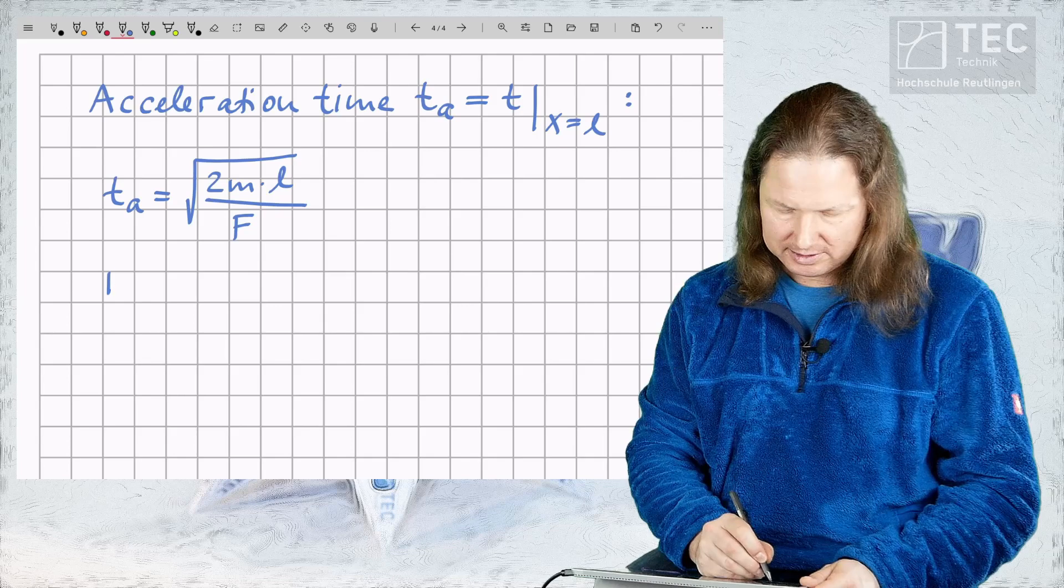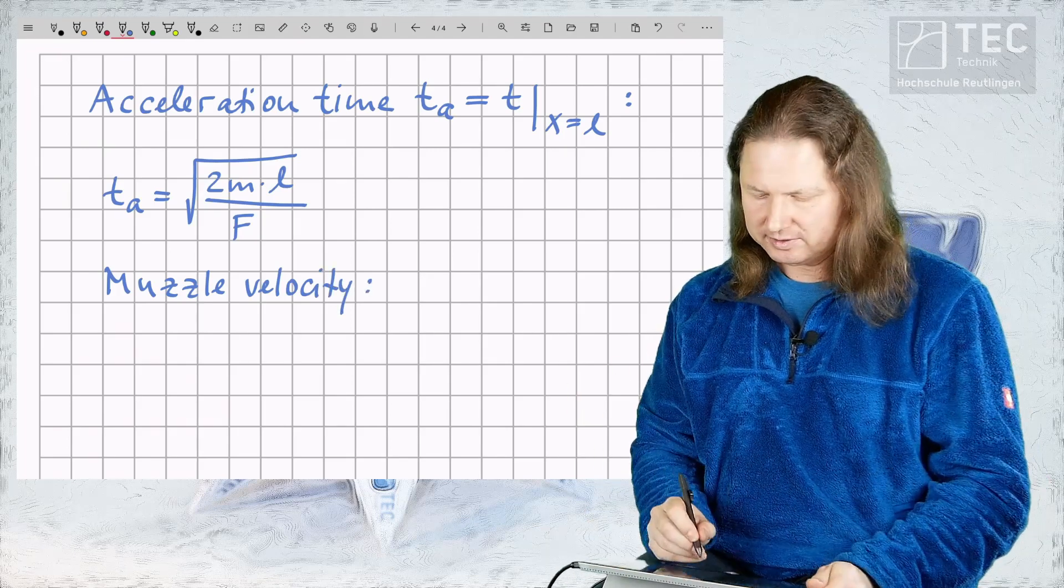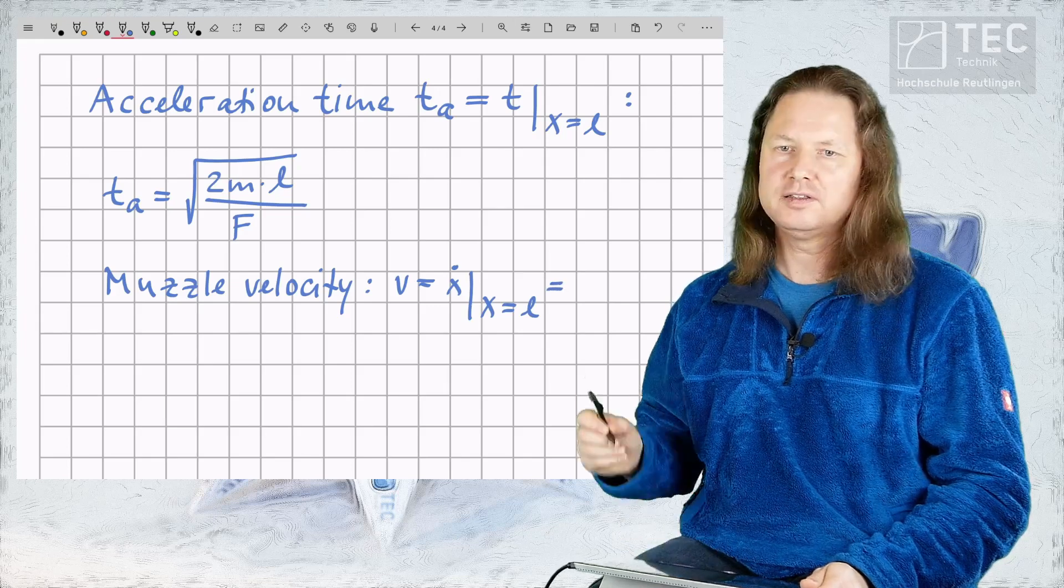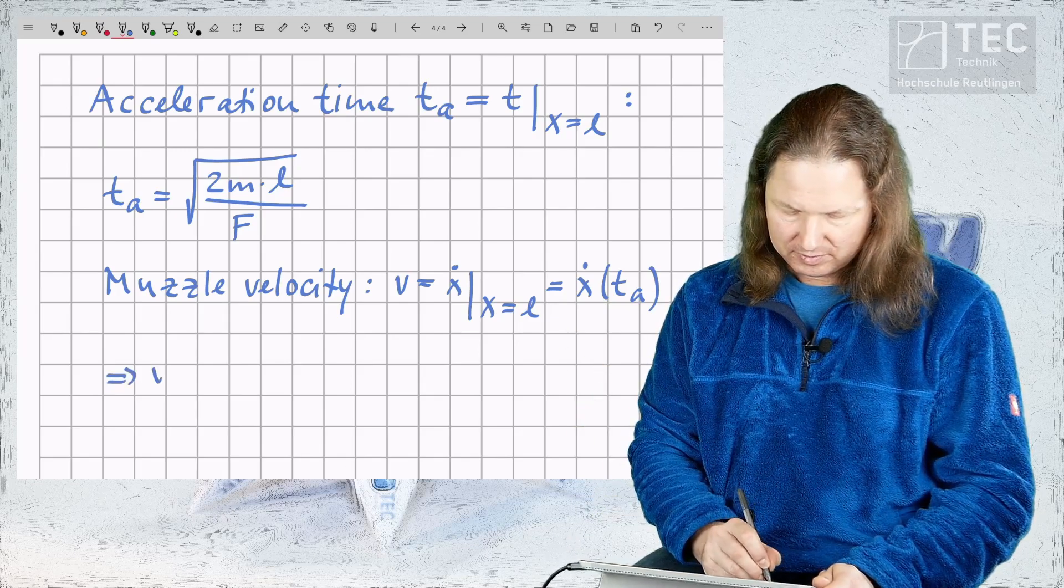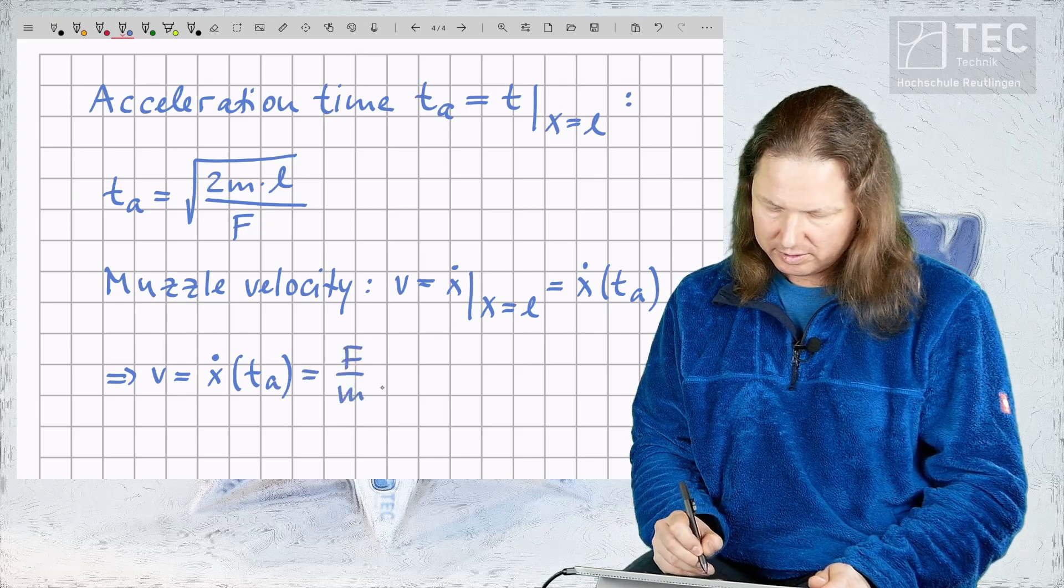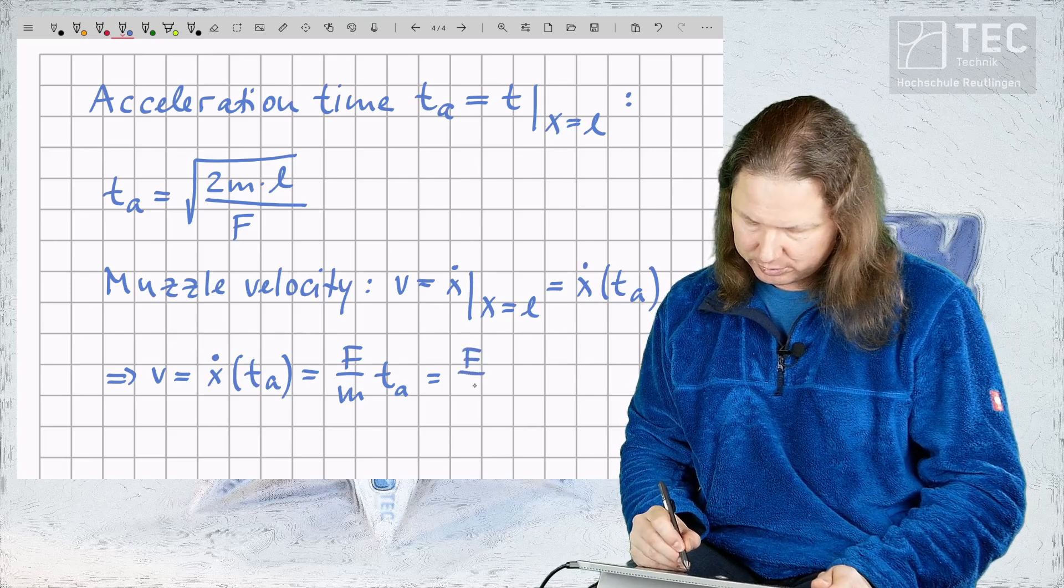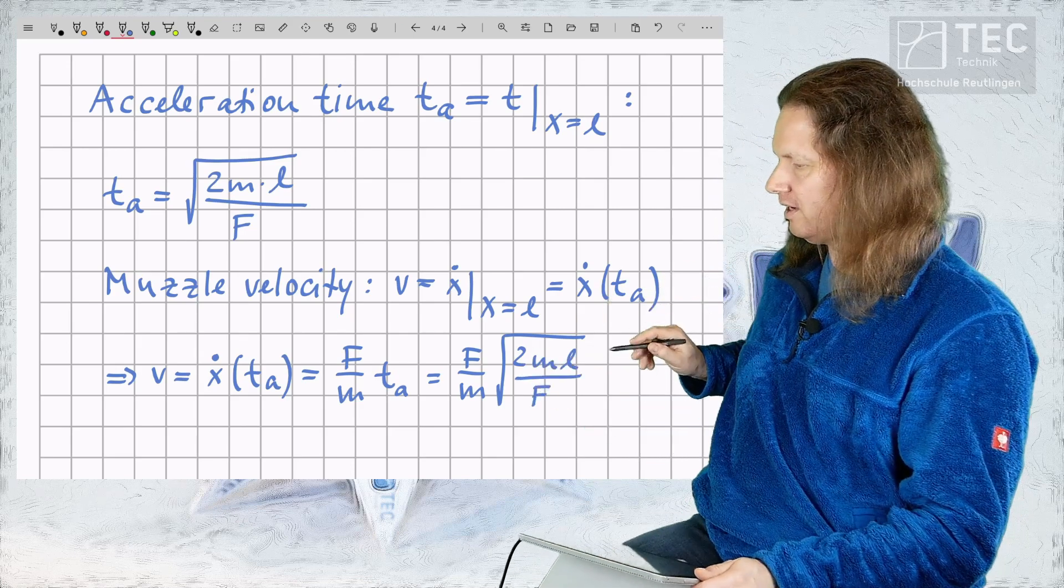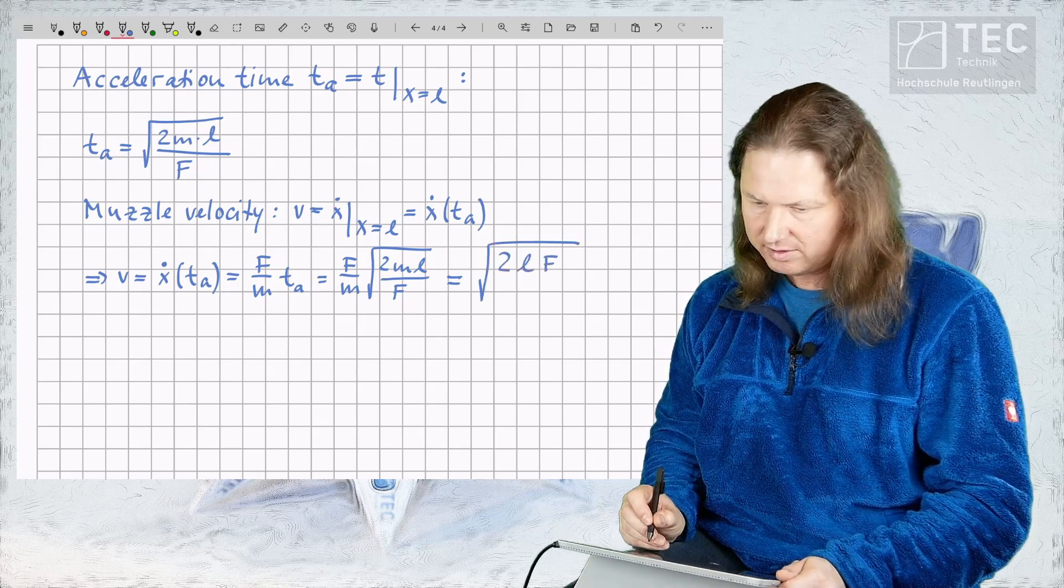With this equation we can calculate the muzzle velocity. The muzzle velocity V is equal to x dot at the point where x is equal to L and this is equal to x dot of our acceleration time TA. And hence we have V is equal to x dot at TA which is F over M TA. And by substituting the right hand side of this equation we get the expression F over M times square root of 2M L divided by F. Now we can simplify this expression a bit to obtain square root of 2L F divided by M.